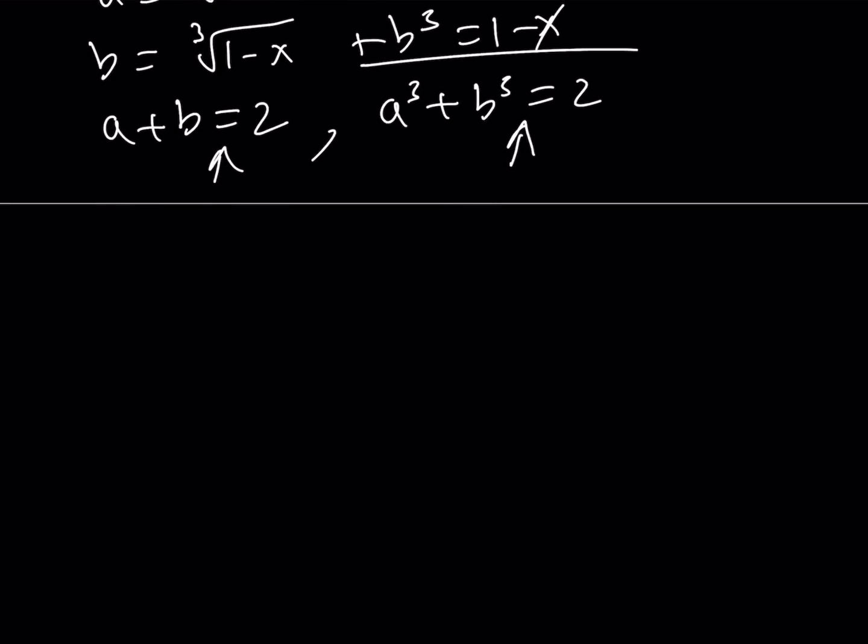Let's go ahead and solve this system. A³ + B³ is sum of 2 cubes. So, it is factorable. It can be written as A plus B times A² minus AB plus B². Now, I do know that A plus B is equal to 2. So, I can substitute that. Which implies that this must equal 1.